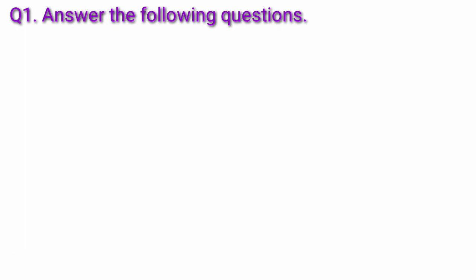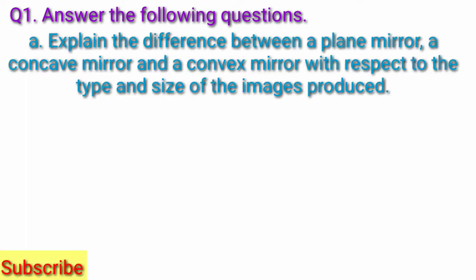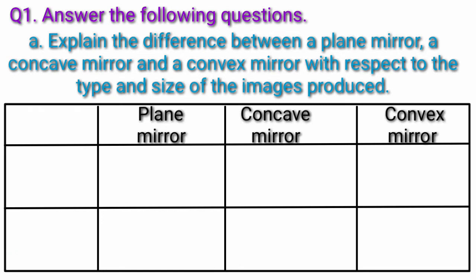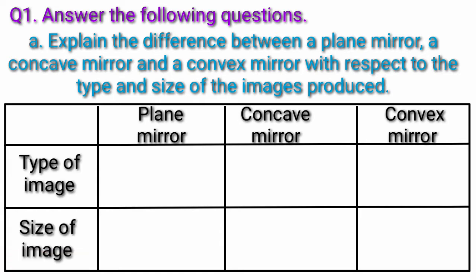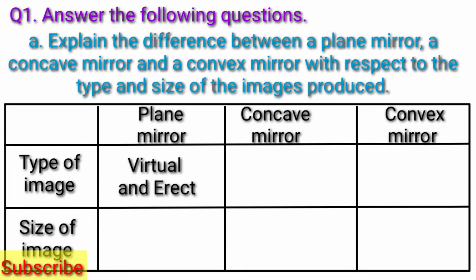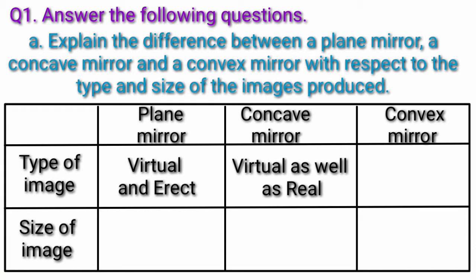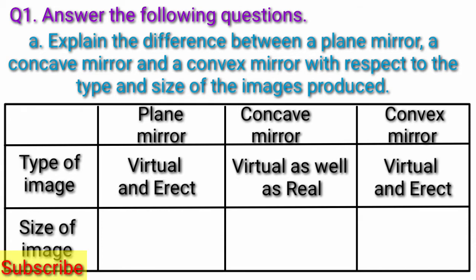Answer the following questions A: Explain the difference between a plane mirror, a concave mirror, and a convex mirror with respect to the type and size of the images produced. Answer: The differences are as follows. Type of image — Plane mirror: virtual and erect; Concave mirror: virtual as well as real; Convex mirror: virtual and erect.